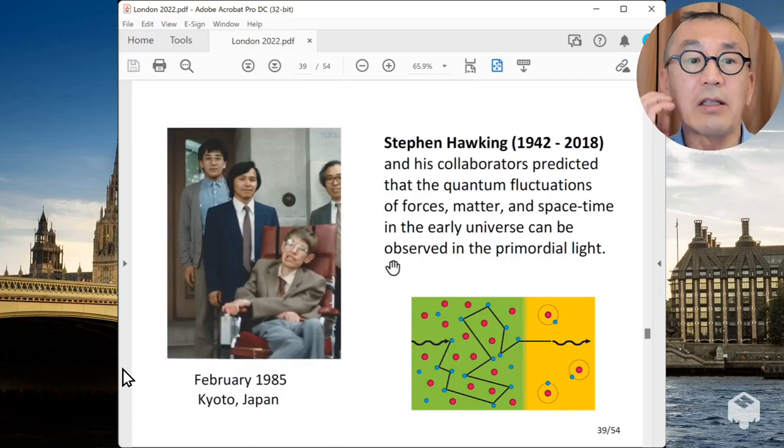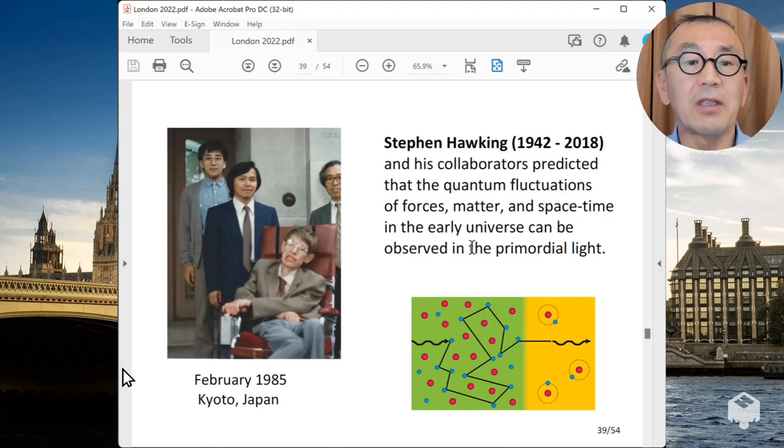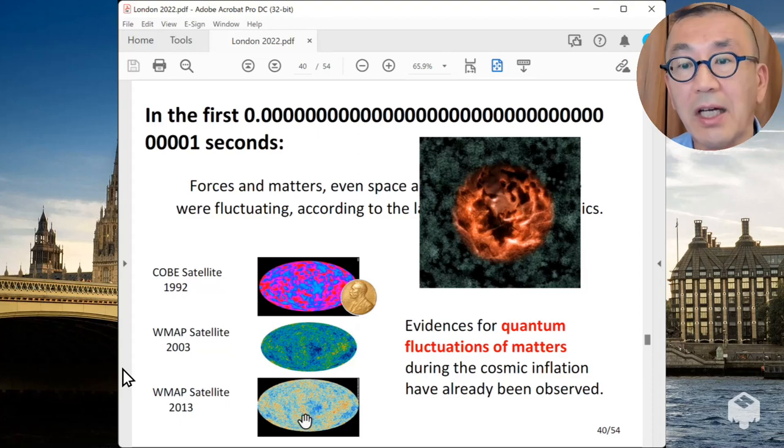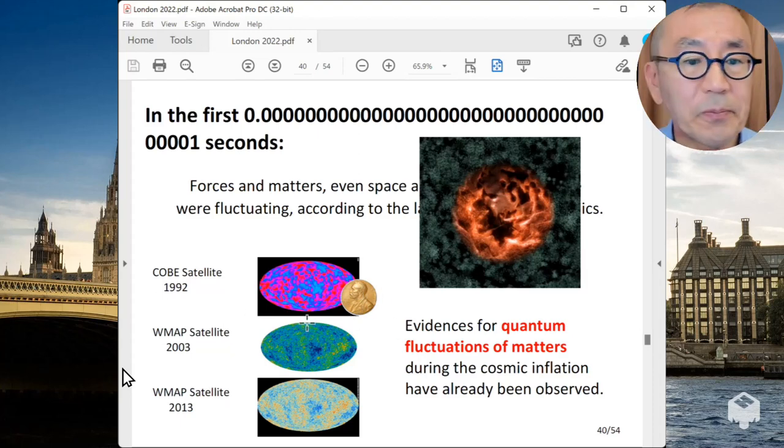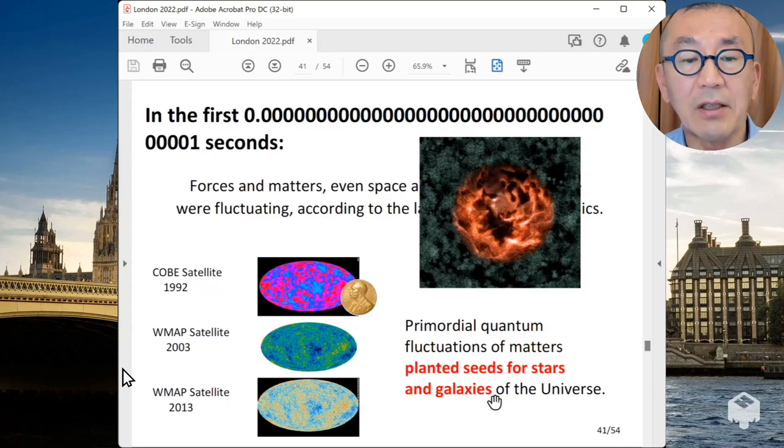For example, Stephen Hawking and his collaborator predicted using quantum mechanics and general relativity and apply that to the inflation universe, predicted that quantum fluctuation of force and matter and space-time in the early universe can be observed in the primordial light in terms of the fluctuation of the primordial light. And in fact, it has been observed in this way. With increasing accuracy, the first observations have received the Nobel Prize.